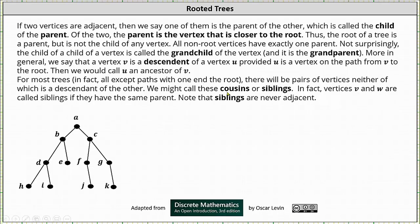If two vertices are adjacent, then we say one of them is the parent of the other, which is called the child of the parent. Of the two, the parent is the vertex that is closer to the root. Thus the root of a tree is a parent, but it is not a child of any vertex. All non-root vertices have exactly one parent.